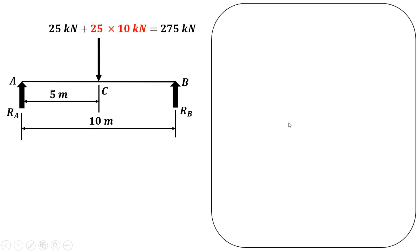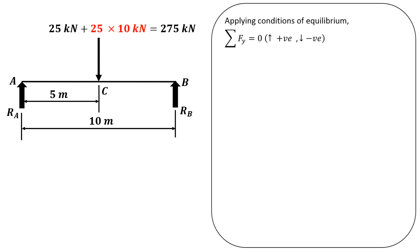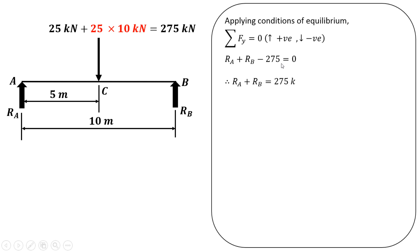Now we apply the conditions of equilibrium. The first condition is that the summation of forces in the y-direction is equal to zero. Taking upward forces as positive and downward forces as negative: Ra and Rb are reactions acting upward, so they are positive, whereas the 275 kilonewton load acts downward and is negative. Transferring the negative 275 to the right-hand side makes it positive. This is Equation 1: Ra + Rb = 275 kilonewton.